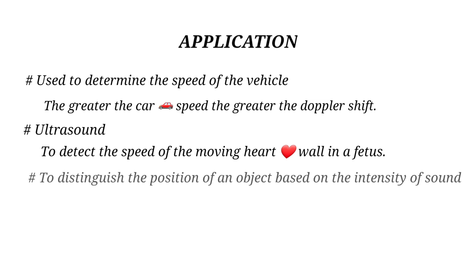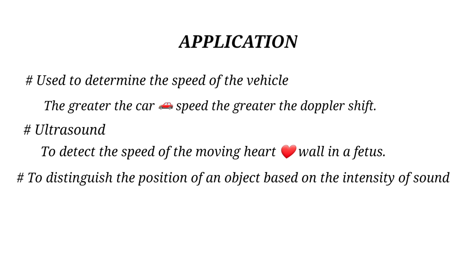Another application: we can distinguish the position of an object based on the intensity of sound. For example, if a bullet is moving towards you, the sound intensity is high. If the bullet is moving away, the intensity of sound is lower. You can experience this sound variation due to Doppler shift. When an object moves towards you, the frequency increases and the intensity of sound is higher. When it moves away, the receiver frequency is lower and the intensity of sound decreases.